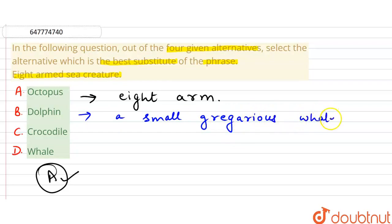The third one is Crocodile, that is Magarmach. A large reptile with long jaw, long tail, short legs, and textured skin is a Crocodile. Magarmach, as we say in Hindi.